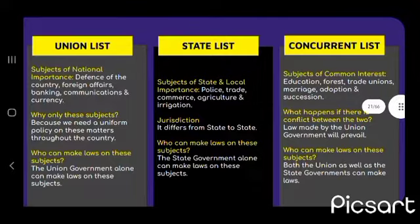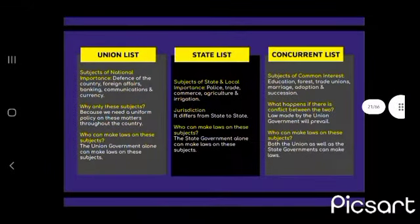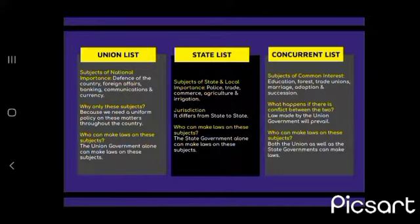Now, three lists: Union List, State List, and Concurrent List. The Union List contains subjects of national importance like defence of the country, foreign affairs, etc. These subjects require uniform policy throughout the country. The union government alone can make laws on these subjects.